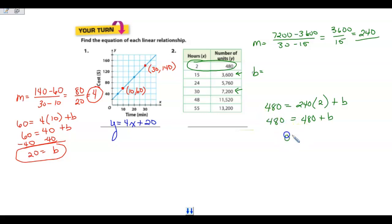And this would be 480 plus b. Subtract 480 from each side. And I get b, which is 0. So knowing that this is 0 for my intercept, I need to remember when I write my equation that there is no b. So 240x, no b because my y-intercept was at 0.